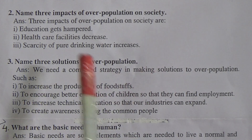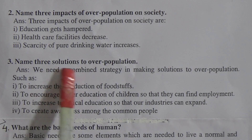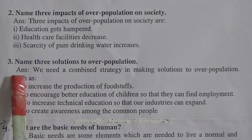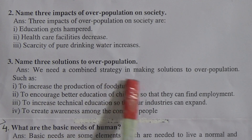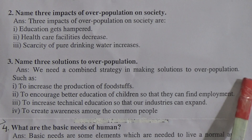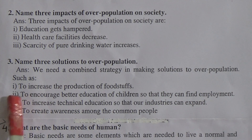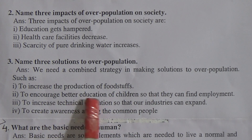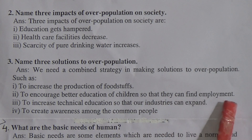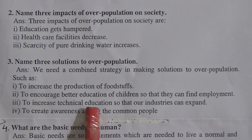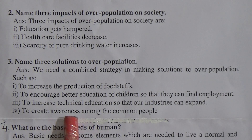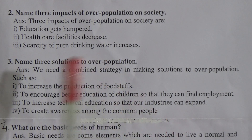Question Number Three: Name three solutions to overpopulation. Answer: We need a combined strategy. Solutions include: Number One — to increase the production of foodstuffs. Number Two — to encourage better education of children so that they can find employment. Number Three — to increase technical education so that our industries can expand. Number Four — to create awareness among the common people.